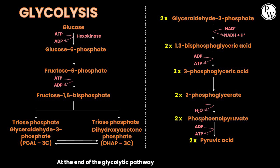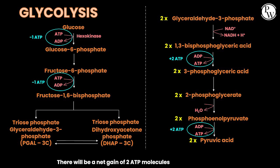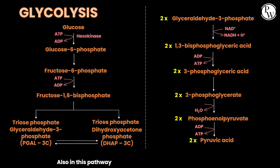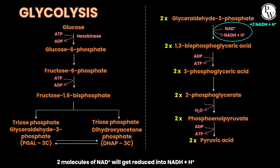At the end of the glycolytic pathway, there will be a net gain of two ATP molecules. Also in this pathway, two molecules of NAD+ will get reduced into NADH + H+.